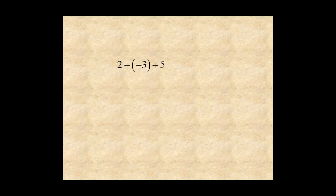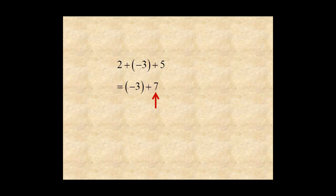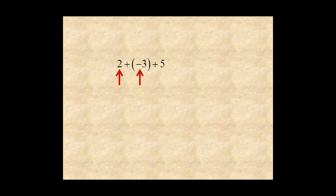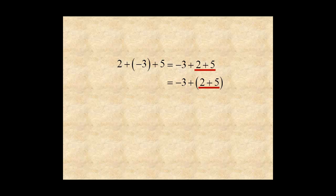The commutative and associative properties seem so simple and obvious that this part of the lesson is often passed over quickly without much thought. However, you probably use these properties all the time without realizing it. For example, to add two plus negative three plus five, you would probably begin by adding the two positive numbers: two plus five equals seven, and then negative three plus seven equals four. Without thinking about it, you're using the commutative property to reverse these two numbers — the sum of two and negative three becomes the sum of negative three and two. Then you're using the associative property to perform the addition two plus five first, getting seven, and then negative three plus seven is four.